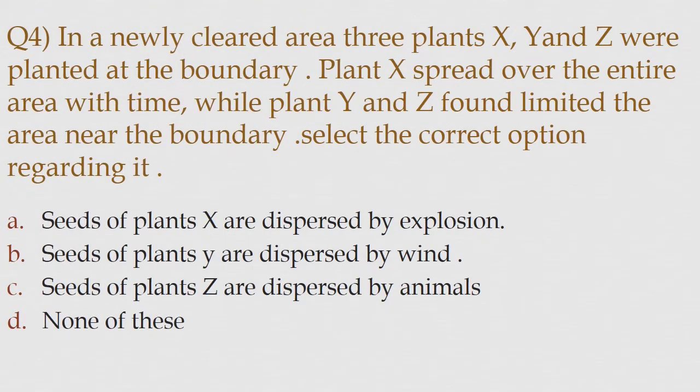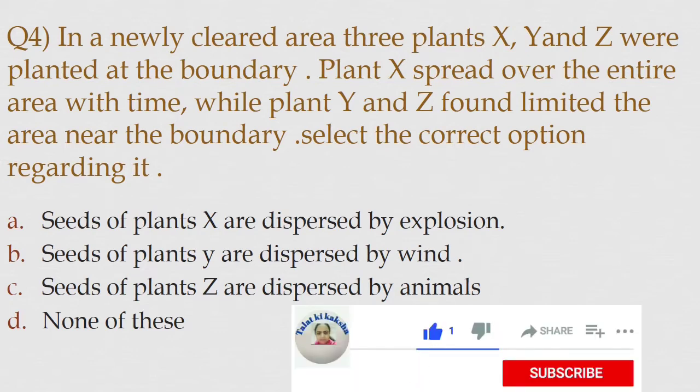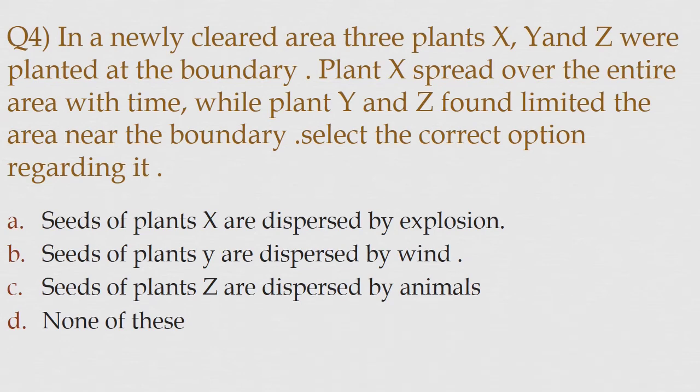Question 4: In a newly cleared area, three plants X, Y and Z were planted at the boundary. Plant X spread over the entire area with time, while plant Y and Z found limited the area near the boundary. Select the correct option regarding it. Option A seeds of plant X are dispersed by explosion, seeds of plant Y are dispersed by wind, option C seeds of plant Z are dispersed by animals, option D none of these. The correct answer is option D none of these.